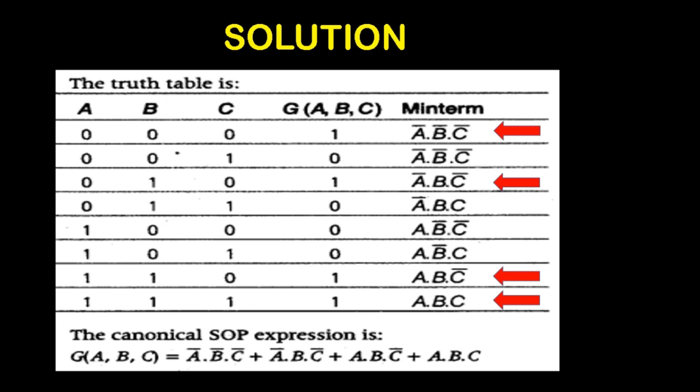The min term is nothing but the multiplicative term written with the value. The first one is A dash, B dash, C dash and the last one is A, B, C. To find the solution, check the output column — wherever you have 1, those values have to be taken. In this screen, I have highlighted those rows with a red arrow mark. The first row is highlighted because in the output column G(A,B,C) it has 1, so the min term is A dash, B dash, C dash. The third row is highlighted with min term A dash, B, C dash. And the last two values are A, B, C dash and A, B, C. All four are the min terms, otherwise called as product terms.